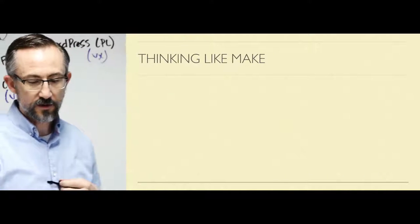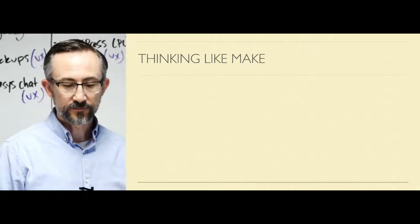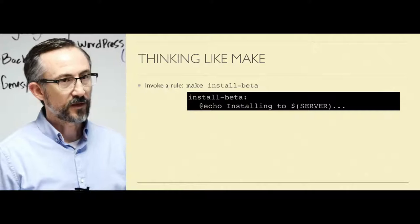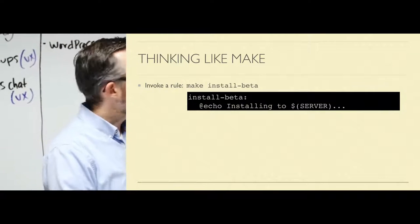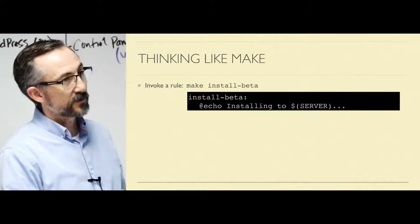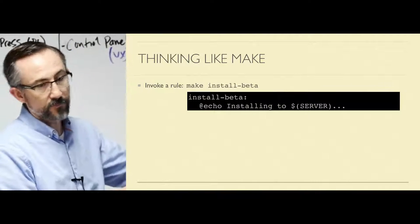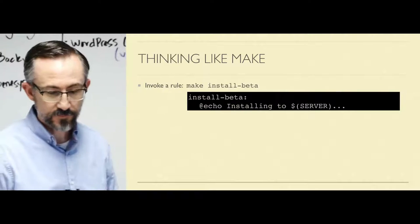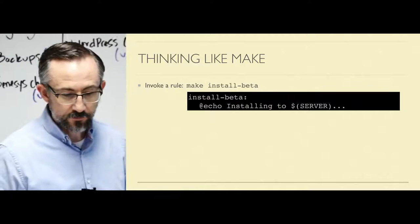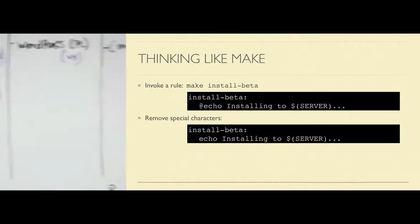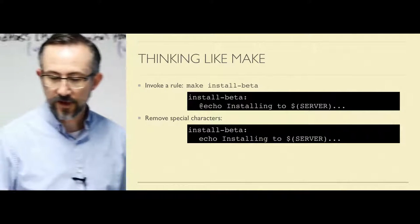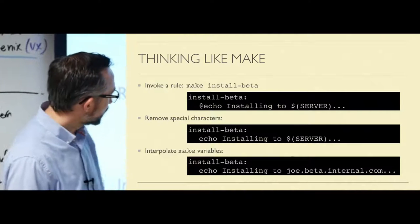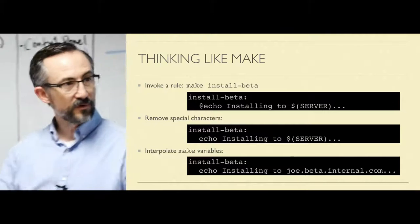We're going to walk through a little exercise on how to think like Make. We're going to invoke a rule — 'make install-beta' like we saw earlier. Make looks at this and says, is this target up to date? It either exists as a file or directory — it does not — or it is older than its dependencies, and there are no dependencies here. This may or may not be marked as phony, but in either case this rule is out of date, so it's going to run the recipe. To execute the recipe, Make removes the special character — the at sign — then does the variable interpolation and swaps out $server for its value. That line is what gets handed off to the shell. The variables happen before the shell ever sees them.